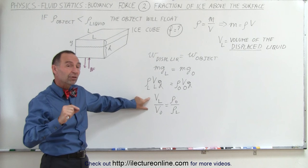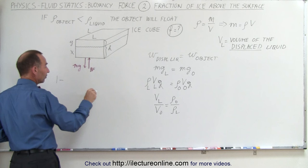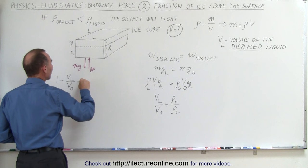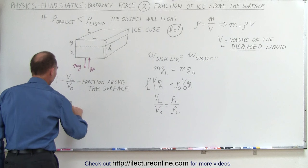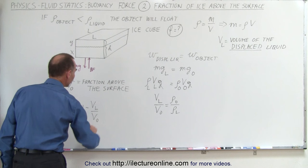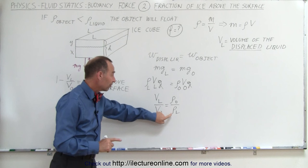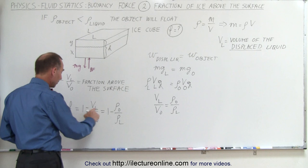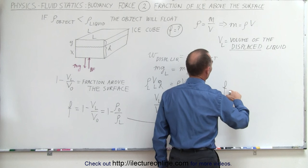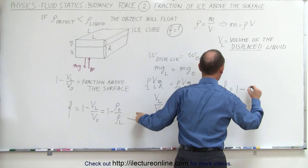Therefore, 1 minus the volume of the displaced liquid divided by the volume of the object equals the fraction above the surface. So the fraction above the surface equals 1 minus V_sub_l divided by V_sub_o. Since V_sub_l over V_sub_o equals the density of the object divided by the density of the liquid, this can also be written as 1 minus the density of the object divided by the density of the liquid.